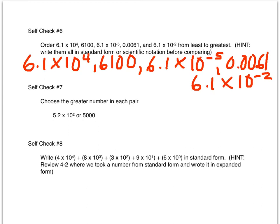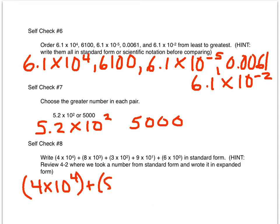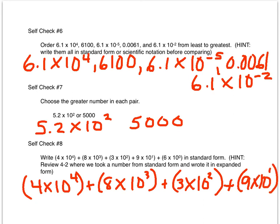In self-check number seven, you'll choose the greater number in each pair. The numbers are 5.2 times 10 to the second and 5,000. In self-check number eight, you're going to write 4 times 10 to the fourth plus 8 times 10 to the third plus 3 times 10 to the second plus 9 times 10 to the first plus 6 times 10 to the zero power in standard form. If you need to look back at section 4.2 where we took a number from standard form and wrote it in expanded form, you may do so. Be sure to show your work, write your answers on the front of the notes, and submit your answers to me. Thank you.